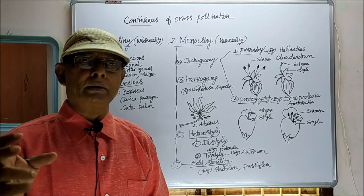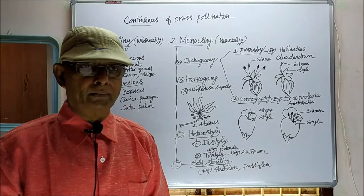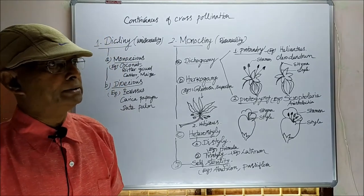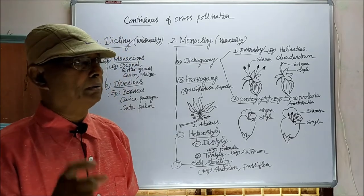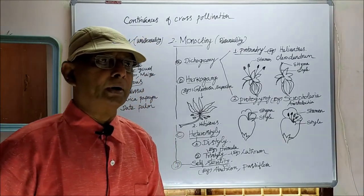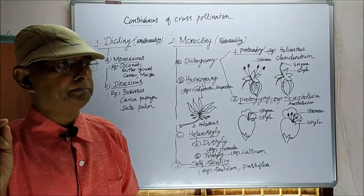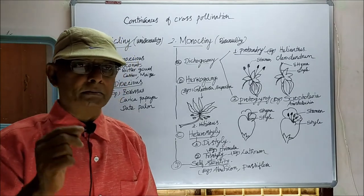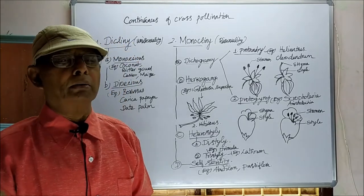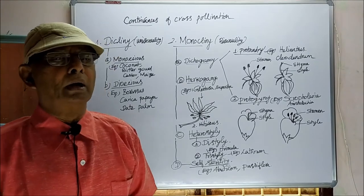What is a unisexual flower? A flower with androecium alone is a male flower. A flower with gynoecium alone is a female flower. So in a flower, when either androecium or gynoecium is present, that flower is called a unisexual flower. Unisexual flowers are classified into two types: male flower and female flower. The male flower is called a staminate flower, which contains only androecium. The female flower is called a pistillate flower, which contains only gynoecium.